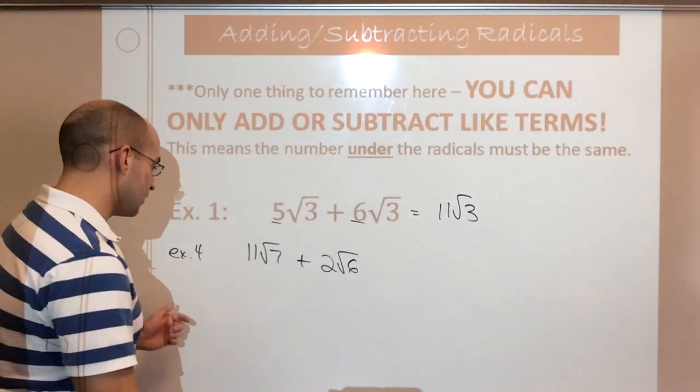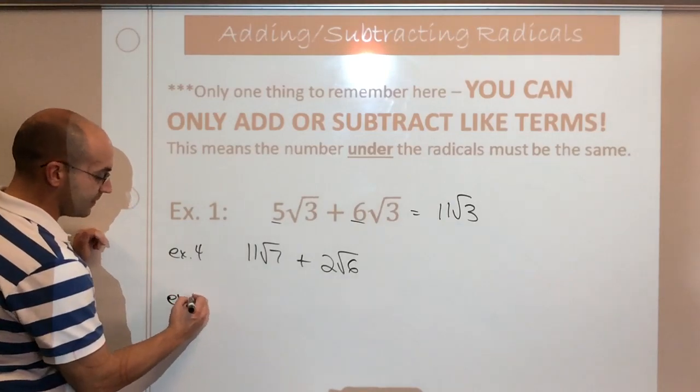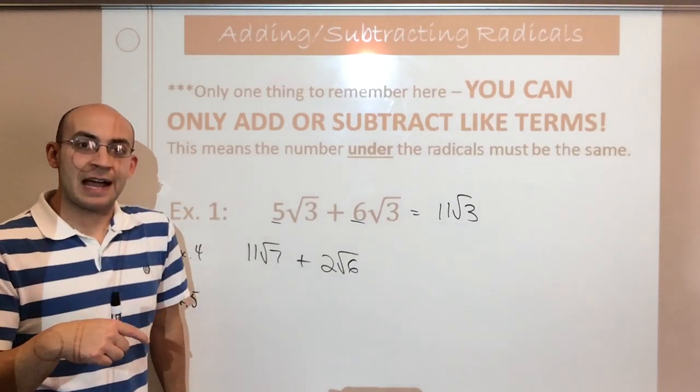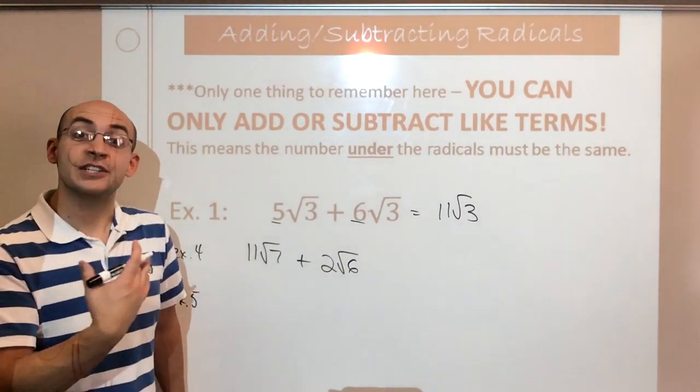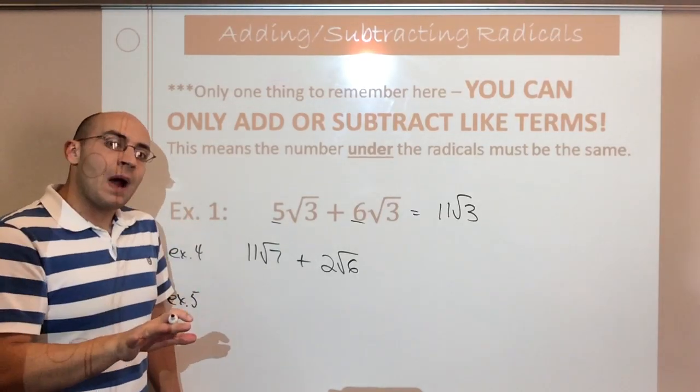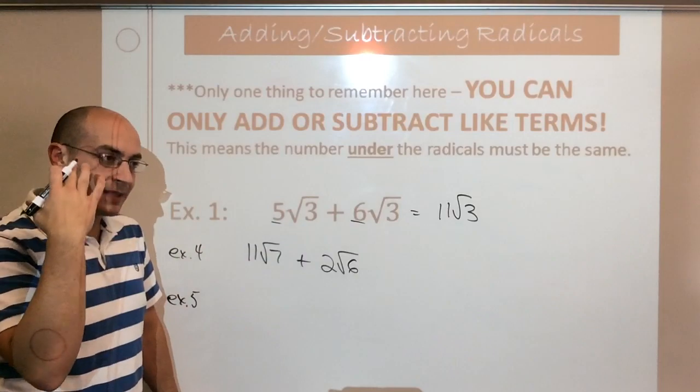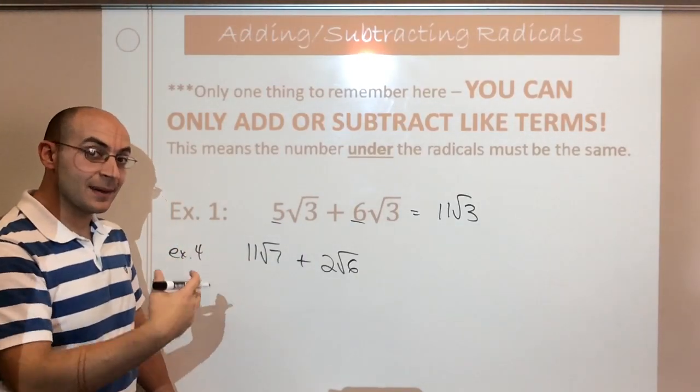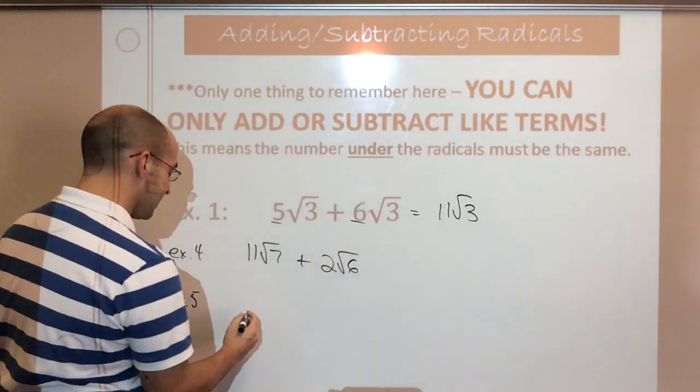When it gets tricky is when it gives you something like this. Because remember, just because we learned simplifying radicals and you were able to do that, it doesn't go away. It still has to be in your mindset that you always have to simplify the number under a radical first. Here's what I mean.